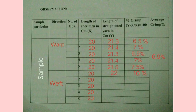In the table we will write the reading, calculate percentage, and same way we will take 5 readings for the weft yarn.